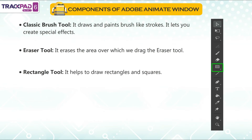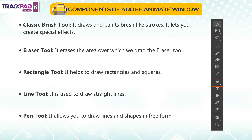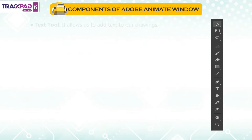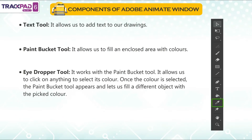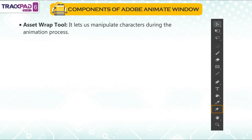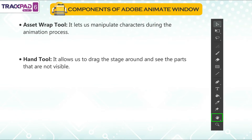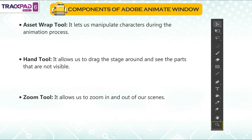Rectangle tool: it helps to draw rectangles and squares. Line tool: it is used to draw straight lines. Pen tool: it allows you to draw lines and shapes in free form. Text tool: it allows us to add text to our drawings. Paint bucket tool: it allows us to fill an enclosed area with colors. Eye dropper tool: it works with the paint bucket tool — it allows us to click on anything to select its color; once the color is selected, the paint bucket tool appears and lets us fill a different object with the picked color. Asset wrap tool: it lets us manipulate characters during the animation process. Hand tool: it allows us to drag the stage around and see the parts that are not visible. Zoom tool: it allows us to zoom in and out of our scene.